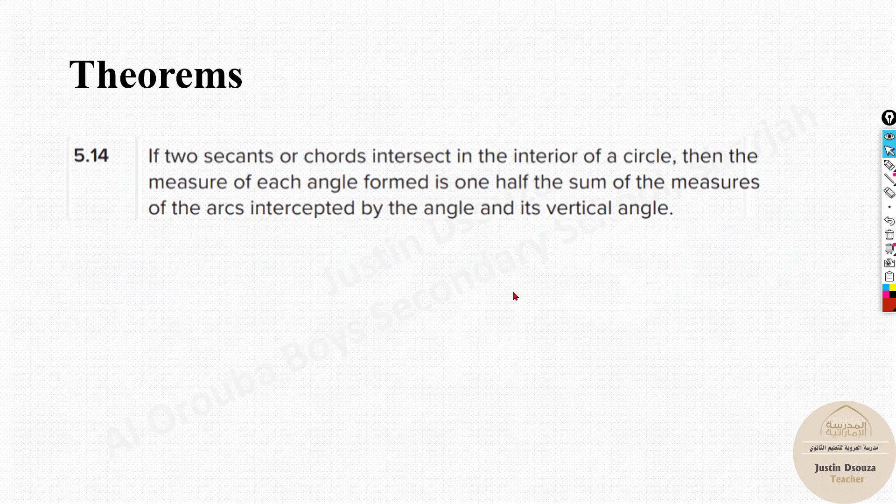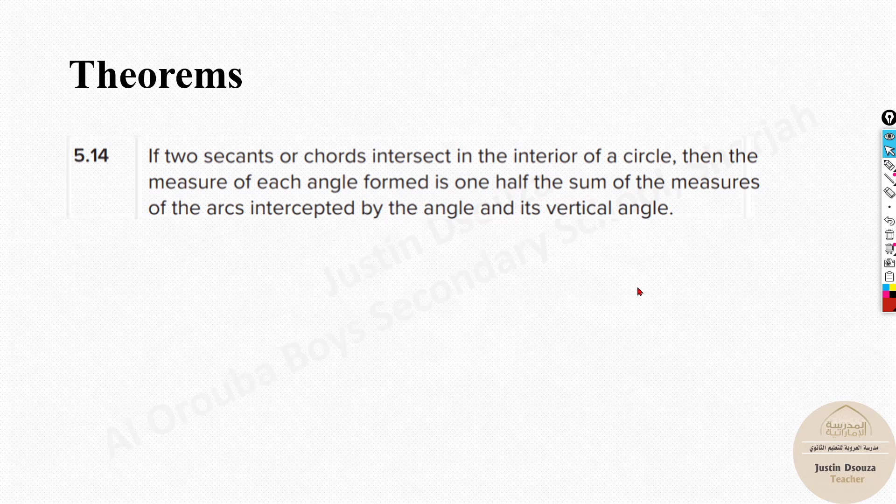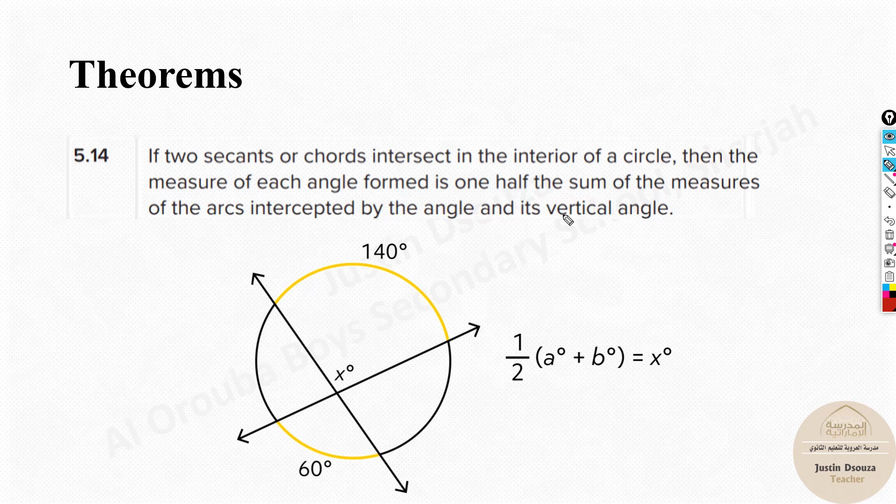The first one is about two secants or chords intersecting inside of a circle. Let's look at the figure. Here you can observe that this particular x angle, we can find this by summing the two opposite arcs and dividing them by two. But before that, let's look at this particular section. Here this x and the opposite angle over here are vertically opposite angles. So they both are equal.